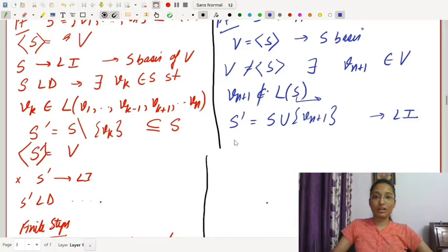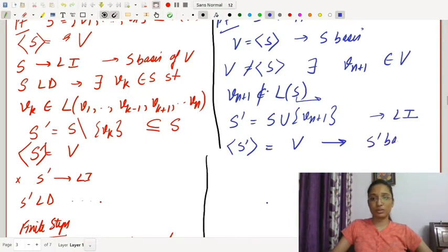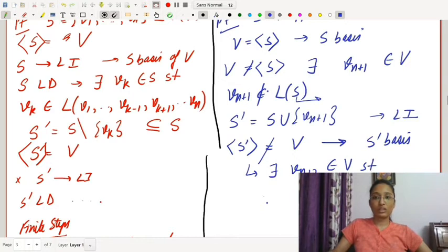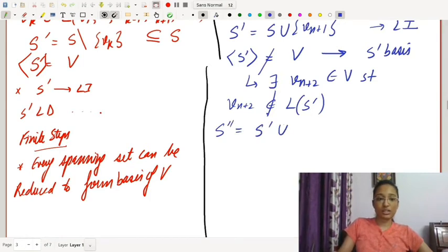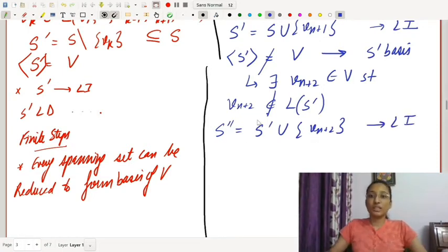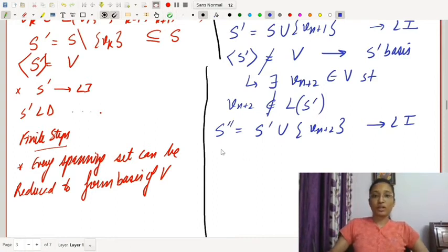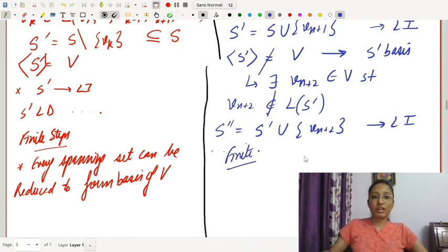Now construct S' equals S union {vn+1}. If the span of S' equals V, then S' is a basis. If not, we can find vn+2 not in the span of S', and S union {vn+1, vn+2} is also linearly independent, since vn+2 cannot be written as a linear combination of vectors in S'. If we continue this process, after finite steps the process will stop because V is finite dimensional. Finally, there will be one set that extends S to become a basis.